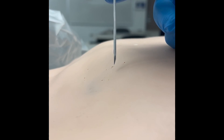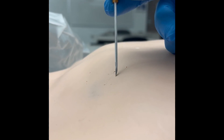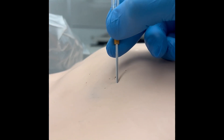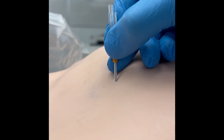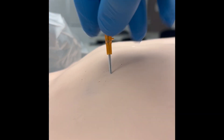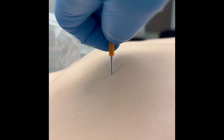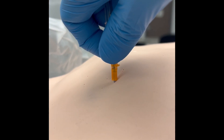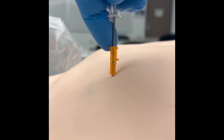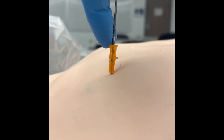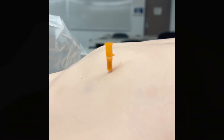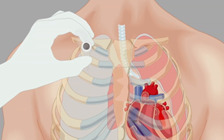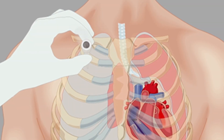Here's a close-up example of the bevel riding the top of the third rib. Advance the IV catheter until you hear the air escape, then advance the catheter until the hub is against the skin. Once you've advanced the catheter, make sure you dispose of the sharp appropriately.